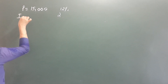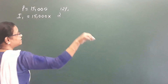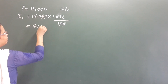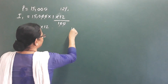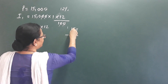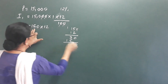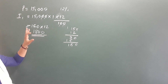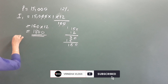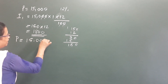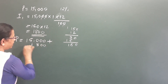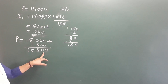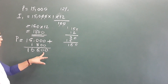Thomas has a compounded interest. In the first year, 15,000 into 12 by 100. That is 150 into 12: 150 into 12 equals 1,800. So the first year interest is 1,800 rupees. The principal amount is 15,000, we add 1,800, giving 16,800 rupees.